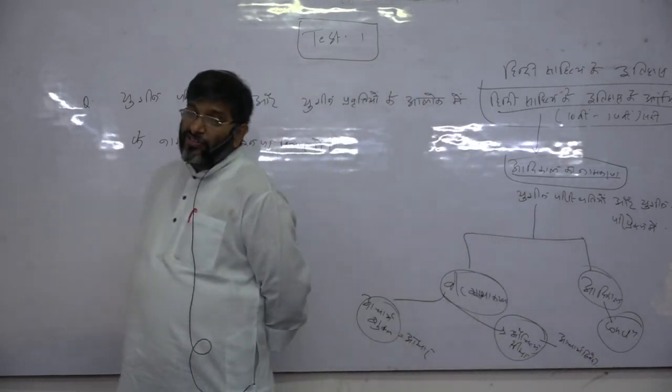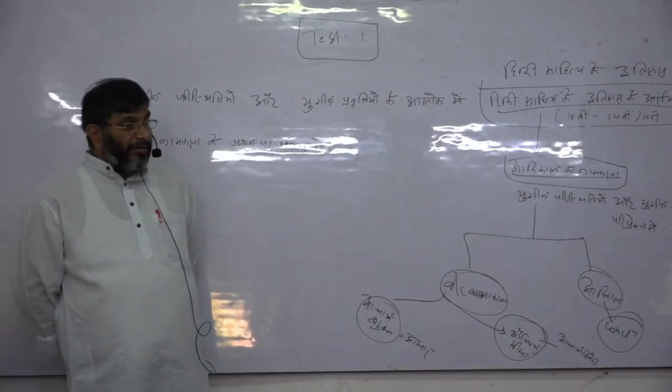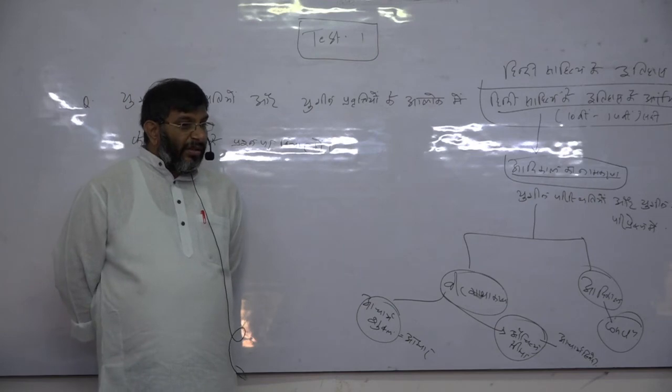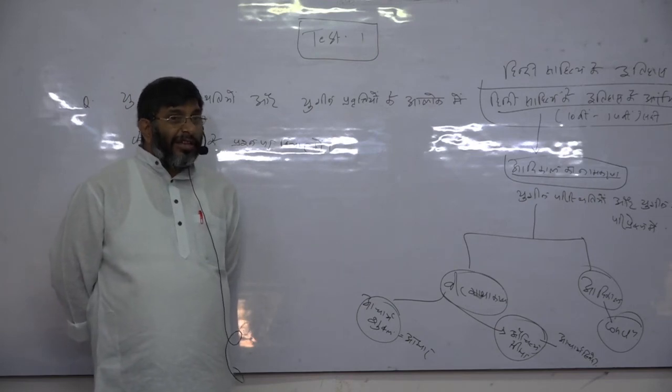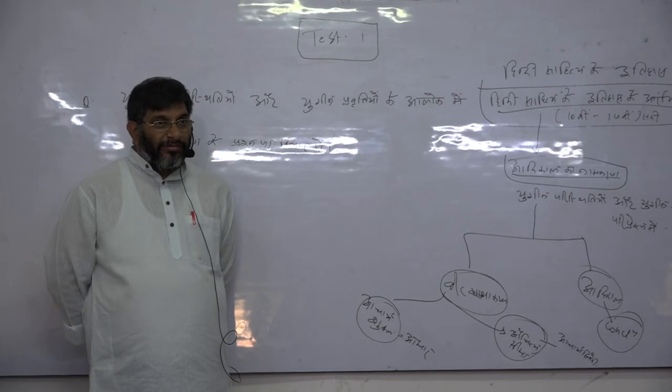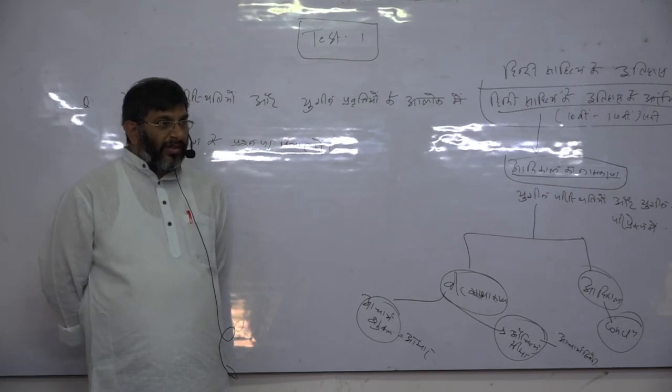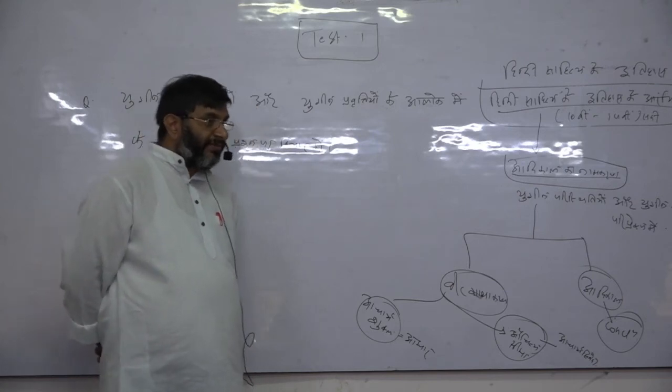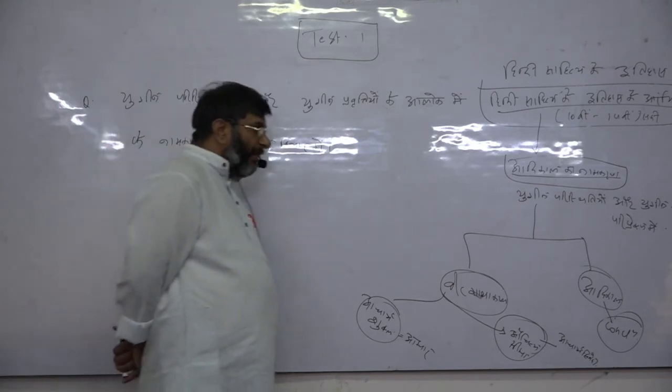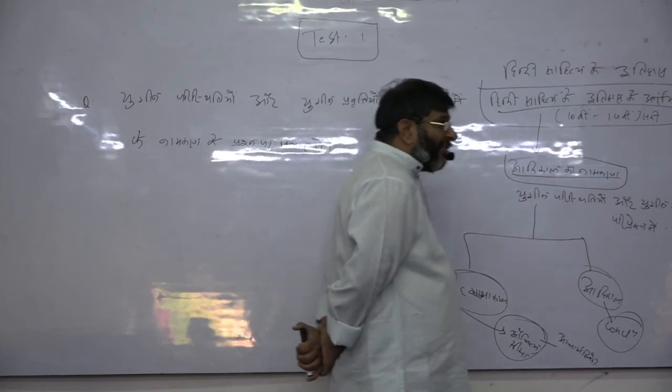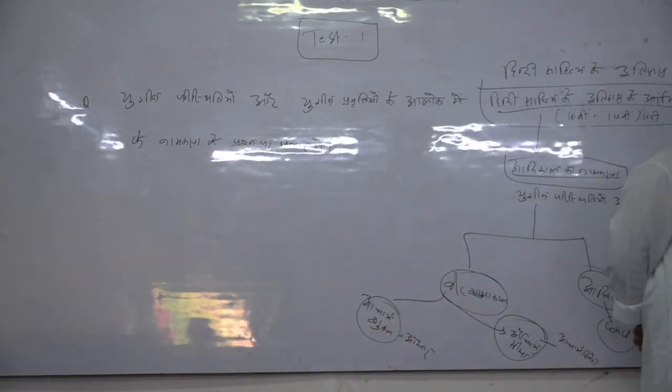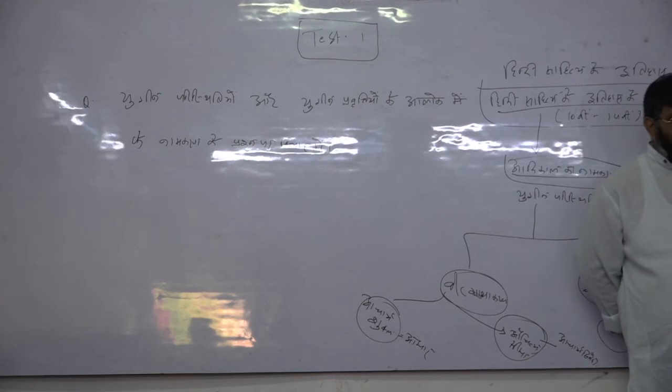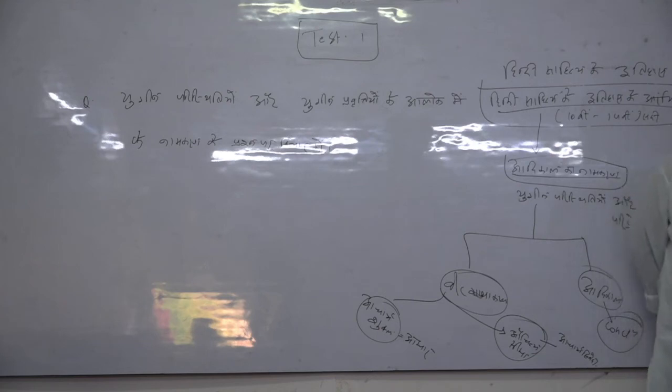To is visangatiy se bachne ke liye kya karna hoga? Is visangatiy se bachne ke liye humein aise naam ko chunna hoga, jis mein sabhi privirhtiyon ka saha-astitva sambhav ho sake. Jis mein sabhi privirhtiyon ka saha-astitva sambhav ho sake. Aur aisa naam kya hai? Adhikaal. Kyunki adhikaal ke antargat in saari privirhtiyon ka saha-astitva bhi sambhav hai.